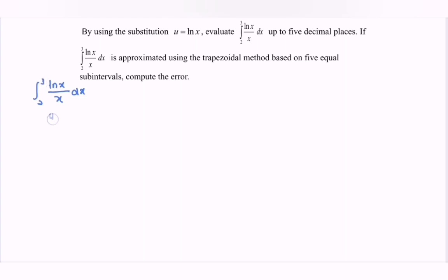By using the substitution method, let u equal ln x. Differentiate u with respect to x, so we have the derivative of ln x is 1 over x. Notice that we have 1 over x dx, which is equal to du.